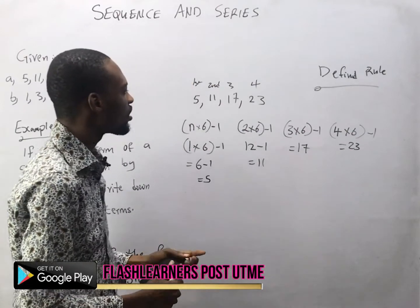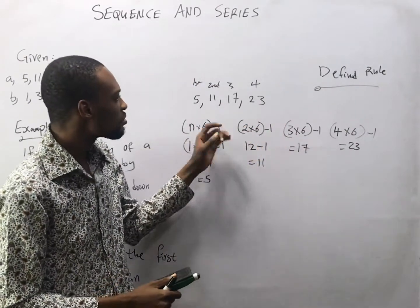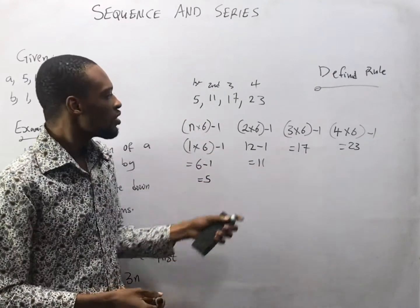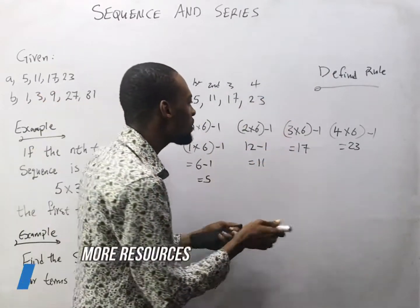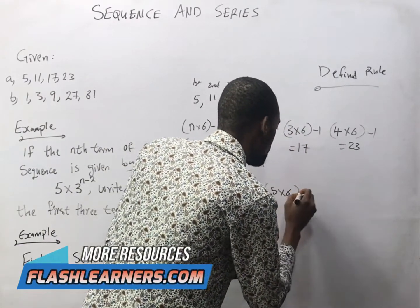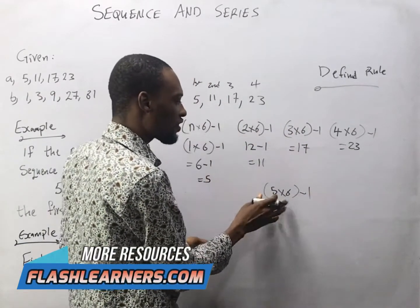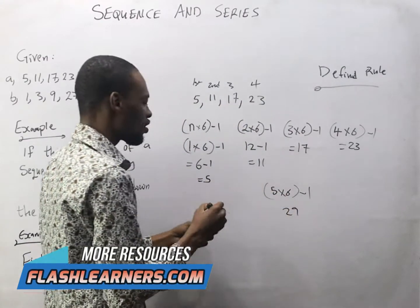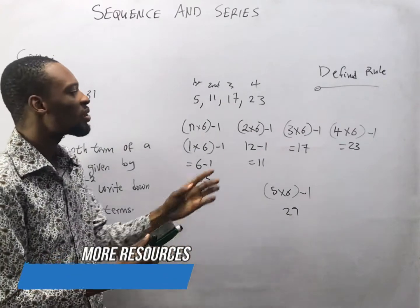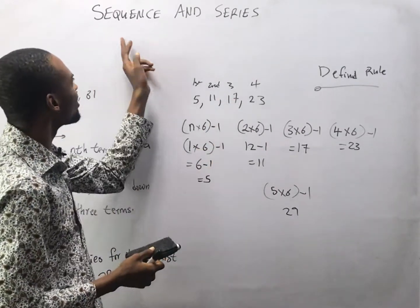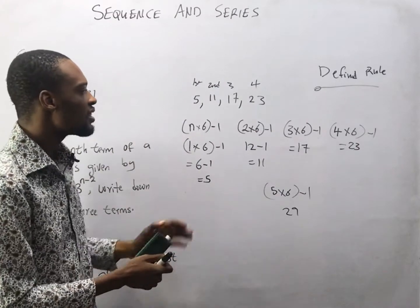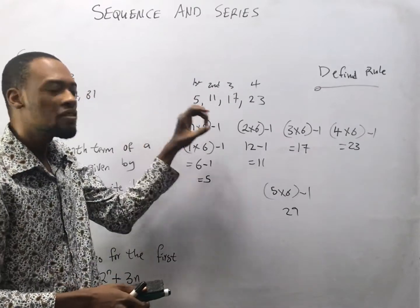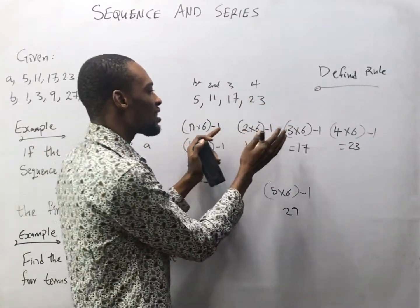So what does that tell you? The formula for this sequence is n times 6 minus 1. To get the fifth term, it will simply be 5 times 6 minus 1. 5 times 6 is 30, minus 1 is 29. You continue like that. Therefore, this is a sequence, because each successive term relates to another by a well-defined rule.